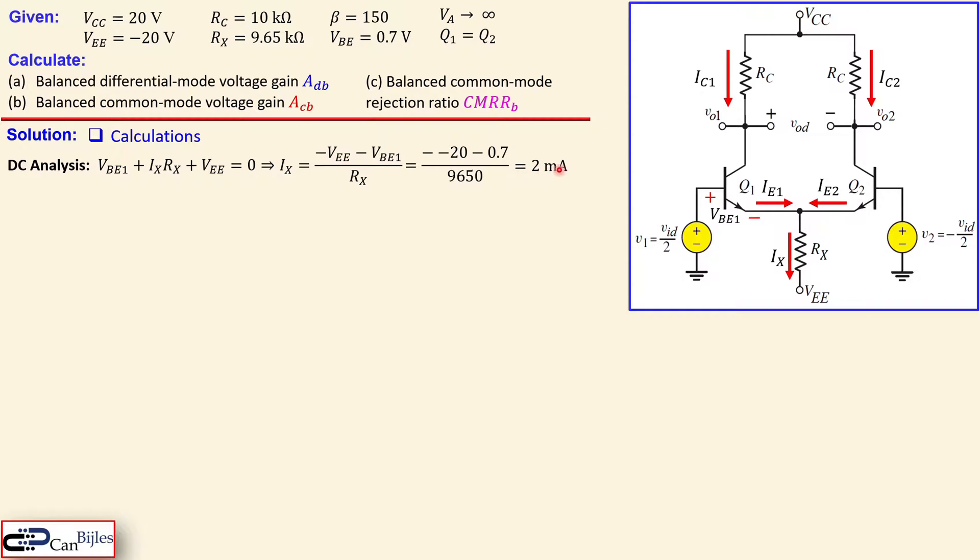This is actually similar to what we had in the first example, where this was an ideal current source also 2 milliamps. This is just to make the comparison nicely between example number one and two.